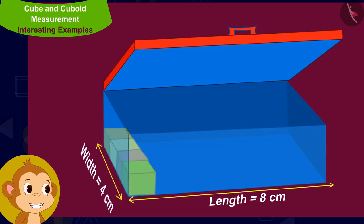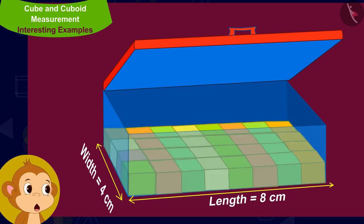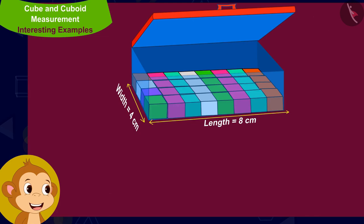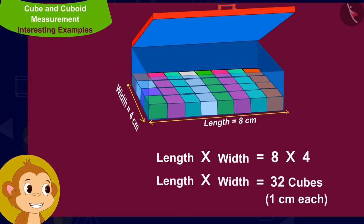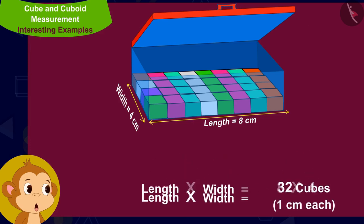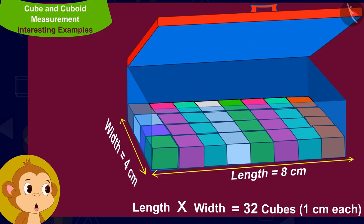Its width is 4 centimeters, or equal to 4 cubes of dimension 1 centimeter each. One layer of a compass box will have the number of cubes in its length times the cubes in its width — that is 8 multiplied by 4, giving 32 cubes of dimension 1 centimeter each.